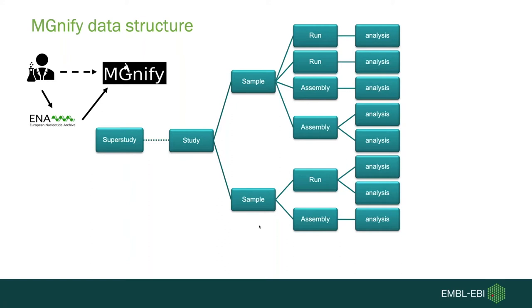The sample contains the metadata of the sample you've extracted — anything ranging from extraction method to storage, sample type, and taxonomy. ENA holds a set of checklists, each with slightly different metadata. Connected to each sample you would have a run — your sequence data — and if you ask us to assemble it, you also have an assembly uploaded to ENA that's linked back to your original sample. We then perform analyses on all runs and assemblies.